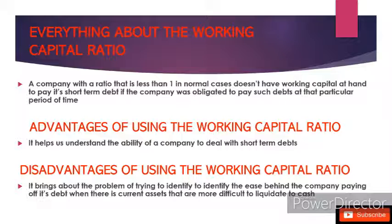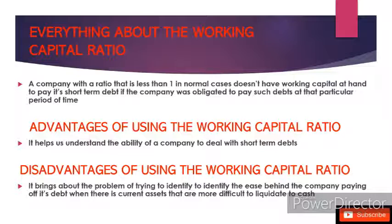The disadvantage of using this ratio is that it brings about the problem of identifying the ease with which a company can pay off its debt when there are current assets that are more difficult to liquidate to cash. Some current assets, such as inventory, need to be sold in exchange for cash before debt can be paid. There are situations where a business could have a large value of current assets that are difficult to liquidate, which could delay debt payment and make it hard to determine whether the business will have an easy or hard time paying its current liabilities.